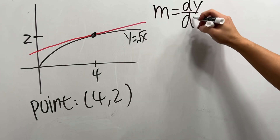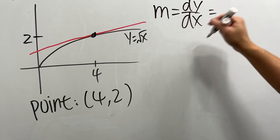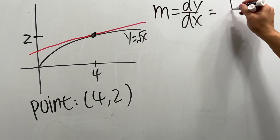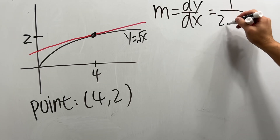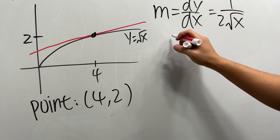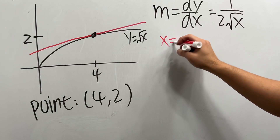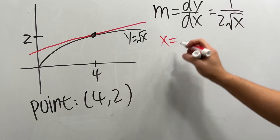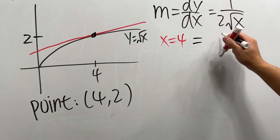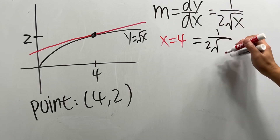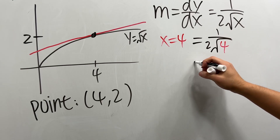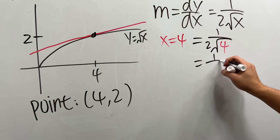So let's go ahead. The derivative of square root of x is 1 over 2 square root of x. But we care about when x is equal to 4. Plugging in, we get 1 over 2 square root of 4, which gives us 1 over 4.